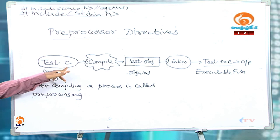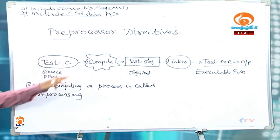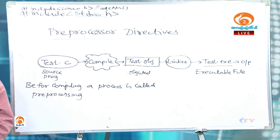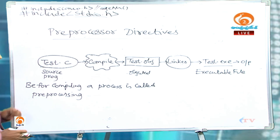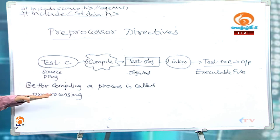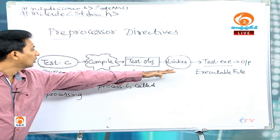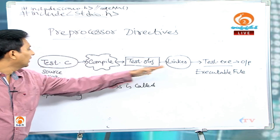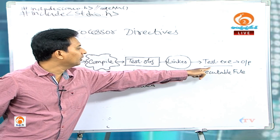Preprocessing is done on the source code by the preprocessor. This is called the preprocessor directive. The compiler and linker interact with the source program to give the executable file.